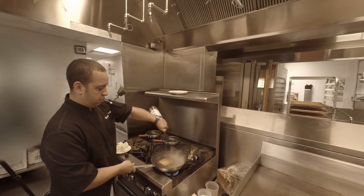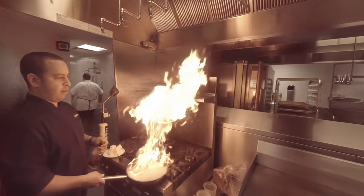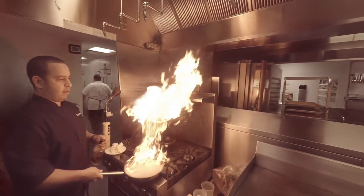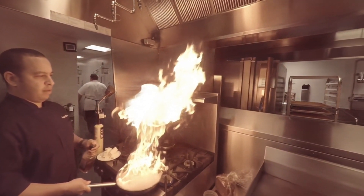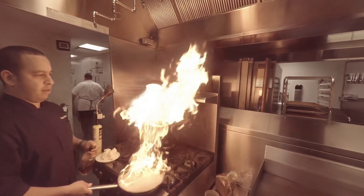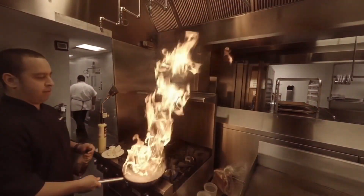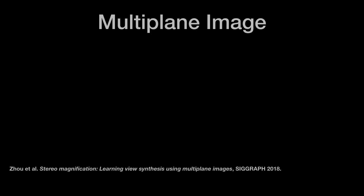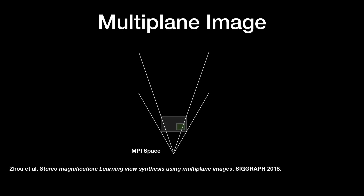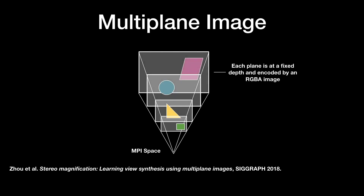MPIs are a powerful representation that can model complex appearance effects, including transparency, reflections, and even volumetric effects, as shown here. An MPI consists of a set of planes, each with an associated RGBA texture map.